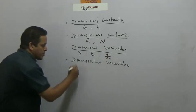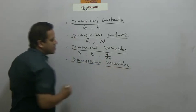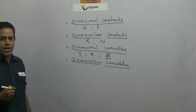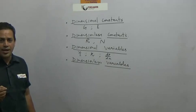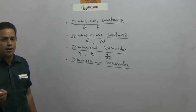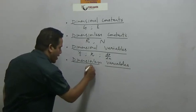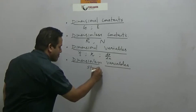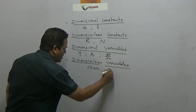And last ones are dimensionless variables. Terms which can change their values and have no dimensions because they are mere ratios. Examples are strain and angle or angular displacement.